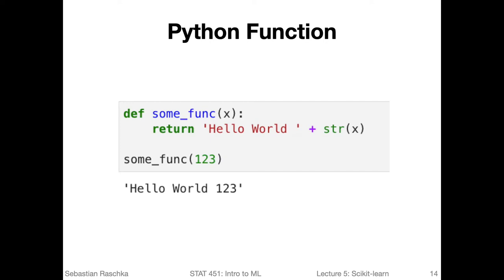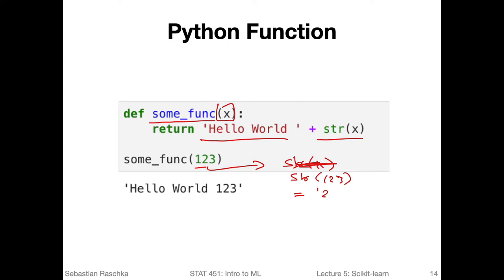Before we do that, let me briefly recap a basic concept about Python functions, because it will become handy when we talk about transforming values in a pandas DataFrame. Here is a very simple Python function — I not very creatively called it 'some_func'. It takes one input argument x, converts it into a string, and concatenates it with the fixed string 'hello world'. So if the input is the integer 123, it gets converted to the string '123', which is concatenated with 'hello world'. We have the 'def' keyword, a colon, and then a return statement.